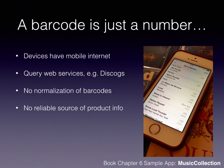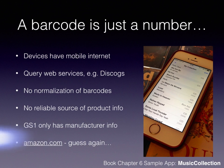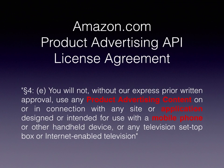Some of you might think the biggest database on the internet for products is Amazon. GS1, the organization that maintains the barcode standard, doesn't even have full product information — only manufacturer prefixes. I actually spent an entire week implementing a wrapper around the Amazon Product Advertising API, and it worked perfectly — I could scan products and get product information. But then I read the license agreement, which says you will not, without express prior written approval, use any product advertising content in an application designed or intended for use with a mobile phone. That's a big bummer — such great information, but you're not supposed to use it on mobile.